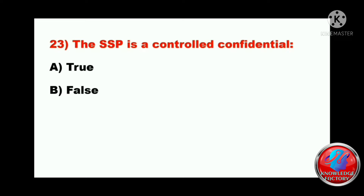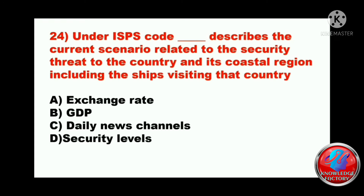Question twenty-three: the ship security plan is a controlled confidential SSP. True or false? The answer will be A - true. Question twenty-four: the ISPS code describes the current scenario related to the security threat to the country and its coastal region including ships visiting that country using A) exchange rate, B) GDP, C) daily news channels, or D) security labels. The answer will be D - security labels.